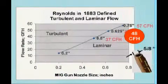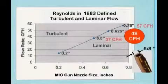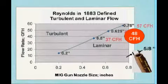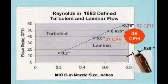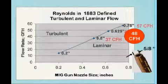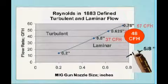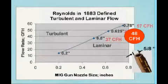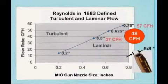Osborne Reynolds, in 1893, defined the velocity where smooth lamellar flow is transformed into turbulent flow. The Welding Institute in Cambridge, England showed that with a typical 5/8 inch diameter nozzle, 48 cubic feet per hour — abbreviated as CFH — was sufficient to cause turbulent flow versus the desired smooth lamellar flow.